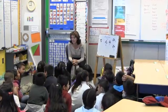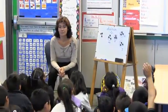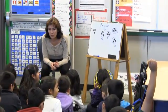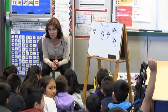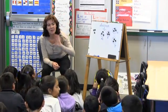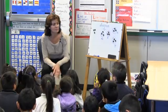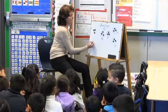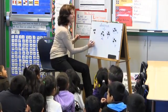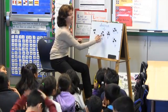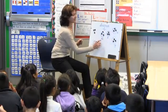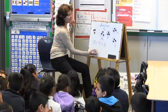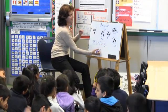Listen carefully. Boys, you're going to be A. Girls, you'll be B. Boys, ask the question: 'What does this mean?' Girls: 'This means fifteen divided by four equals three, with a remainder of three.'